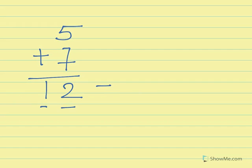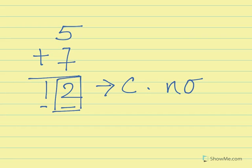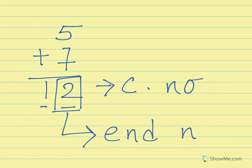The number in the ones position is called the n number. So these three things — carrying number, non-carrying number, and n number — are important for doing fast addition.